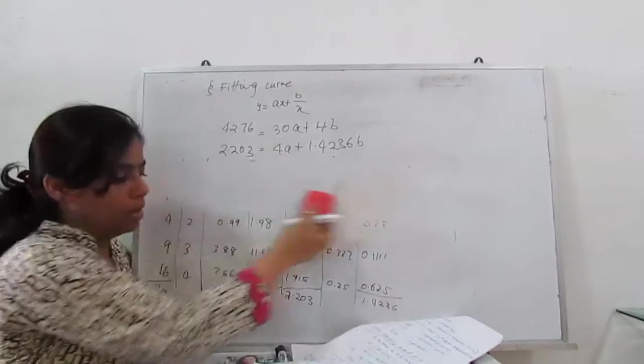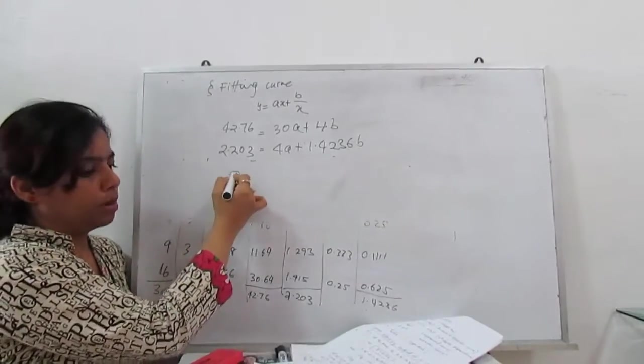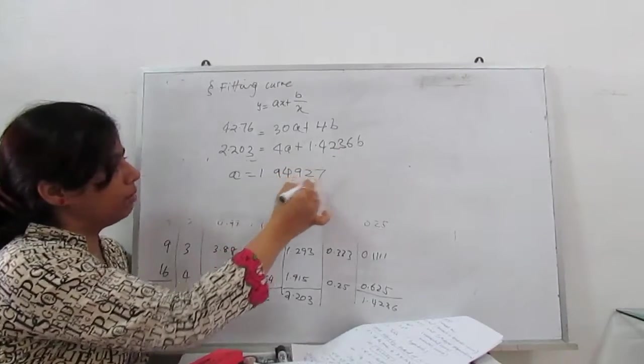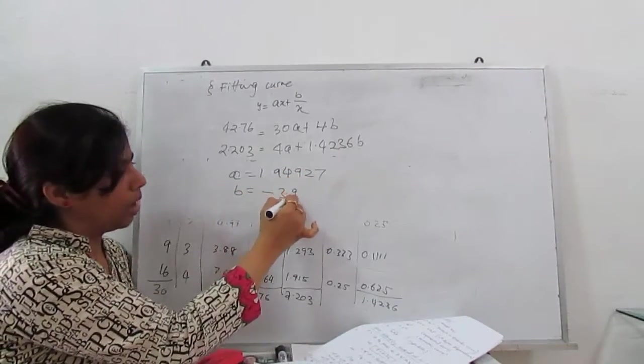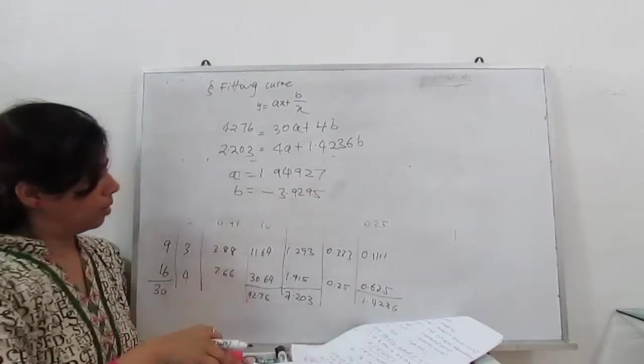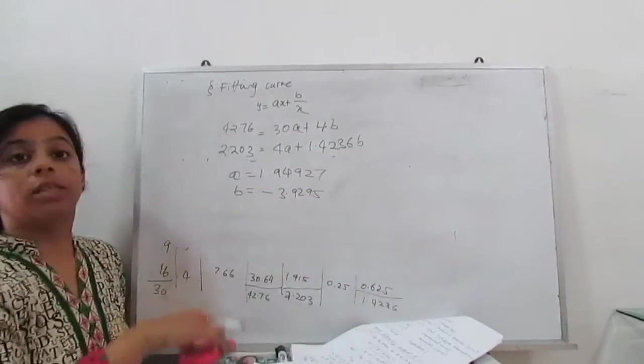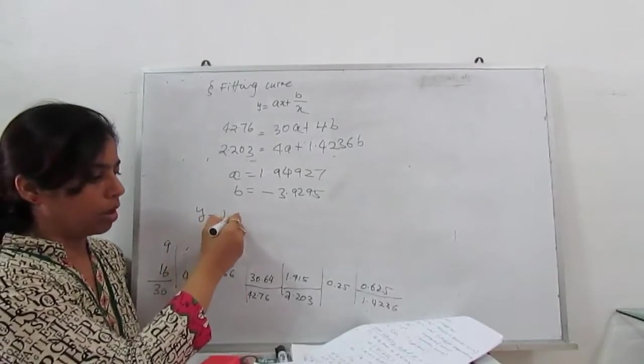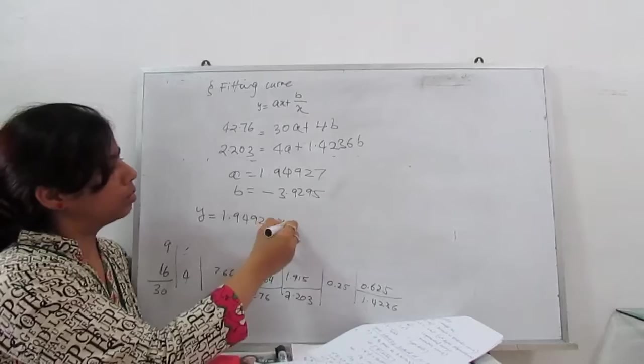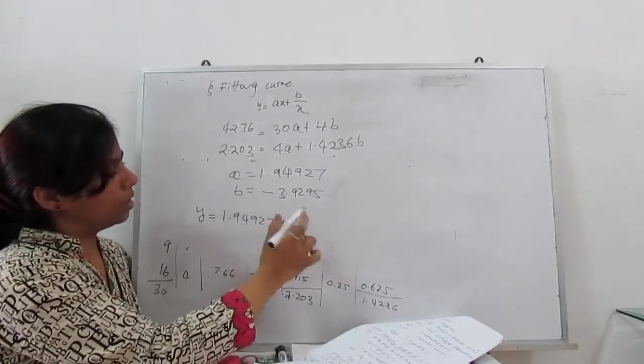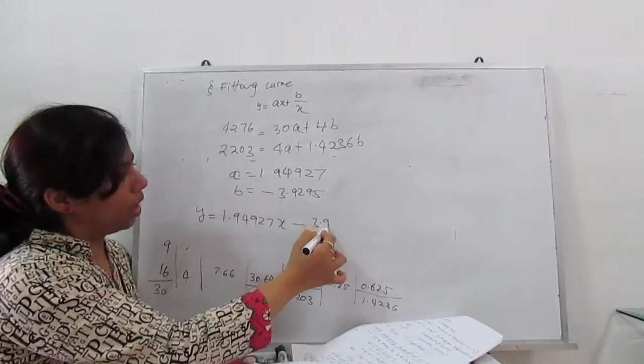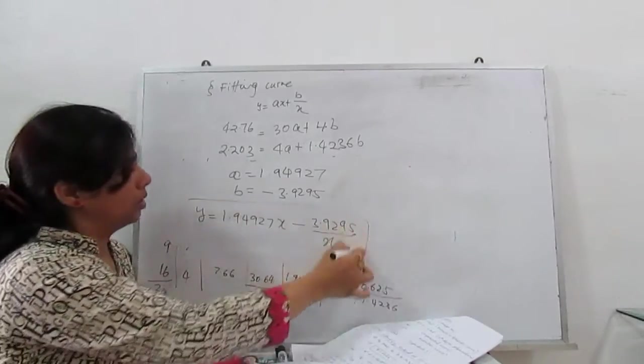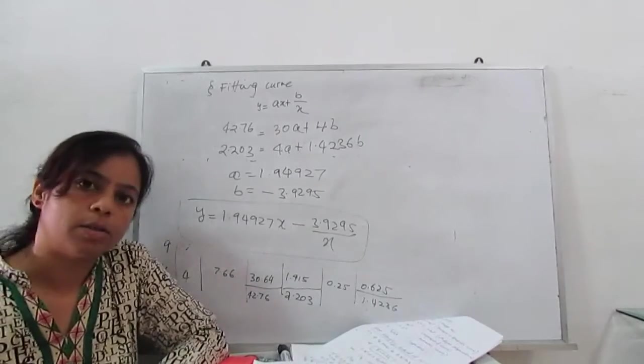Calculate A and B. Your A and B become A is 1.94927. B is minus 3.9295. So what is your original equation which they want? Required solution is 1.94927x minus 3.9295 by x. So this is our required solution.